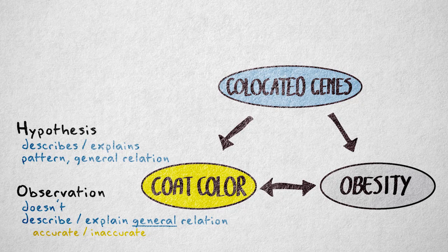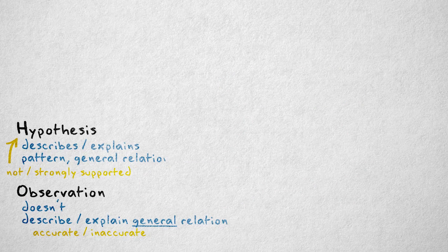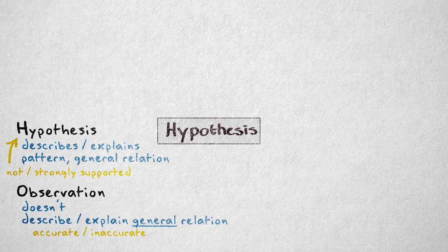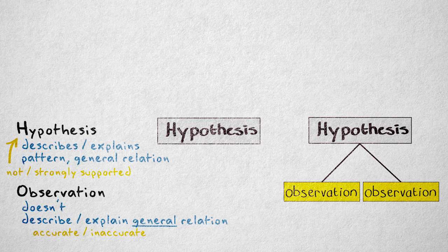The plausibility of a hypothesis can range from very uncertain to very certain. A hypothesis can be unsupported and therefore uncertain, for example, if it's new and still untested. A hypothesis can also be strongly supported by many empirical studies and therefore more certain.